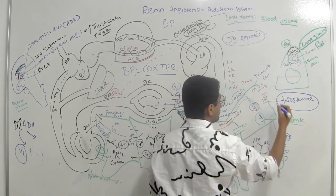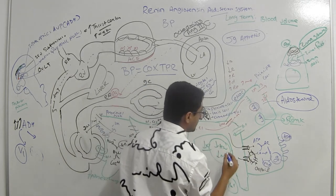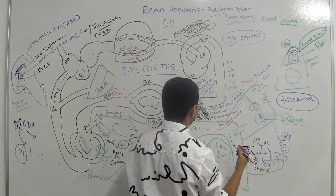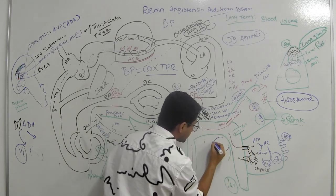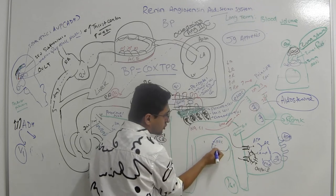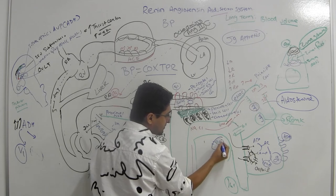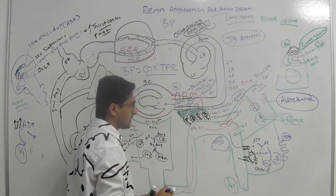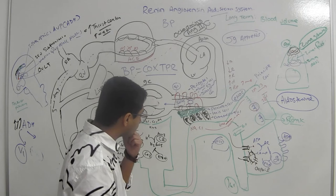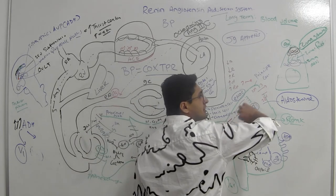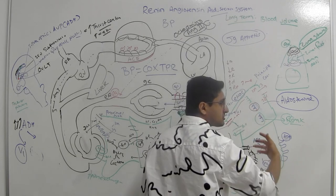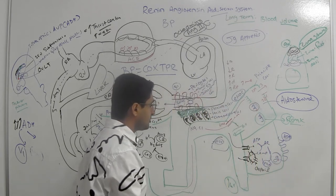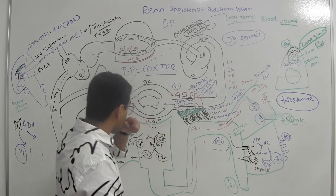Aldosterone also acts on the early distal tubule cells, stimulating NCC (sodium-chloride cotransporter) channels, which reabsorb both sodium and chloride. This further increases sodium and water reabsorption, contributing to increased blood volume and blood pressure.